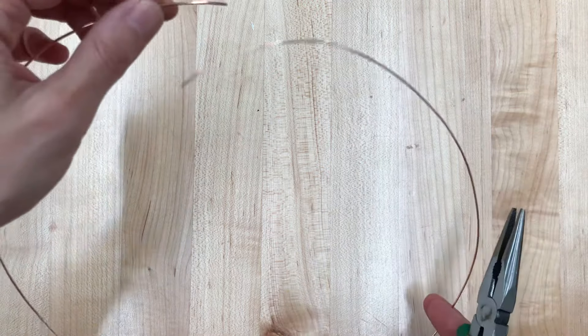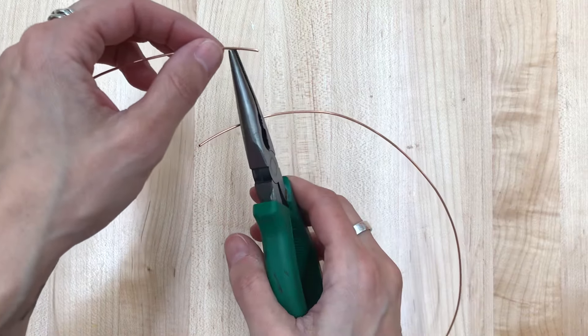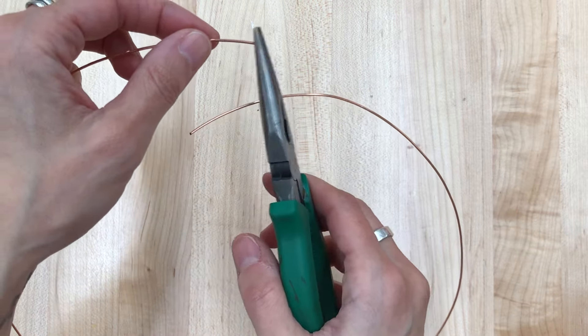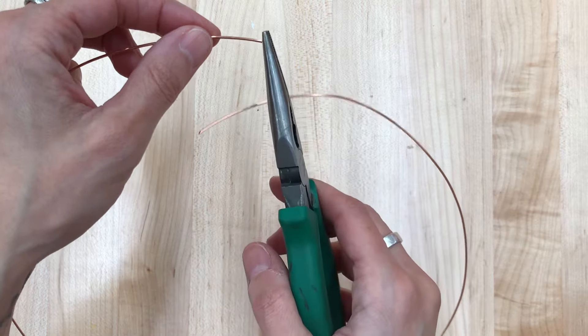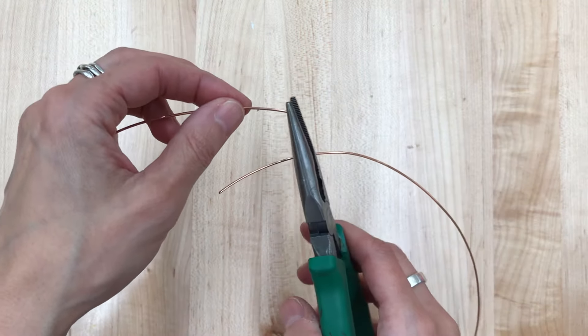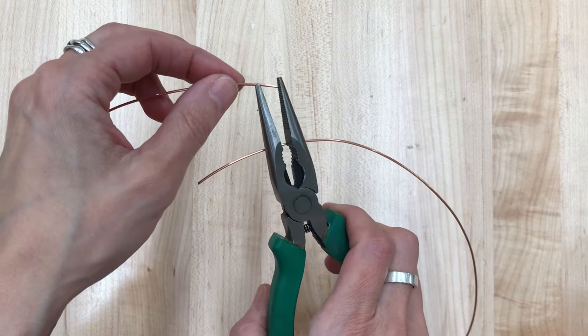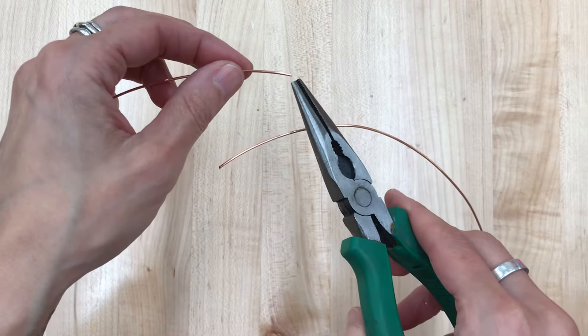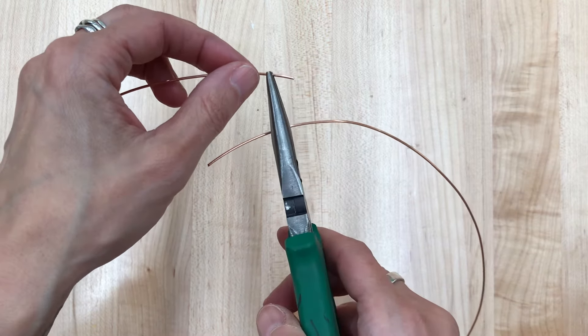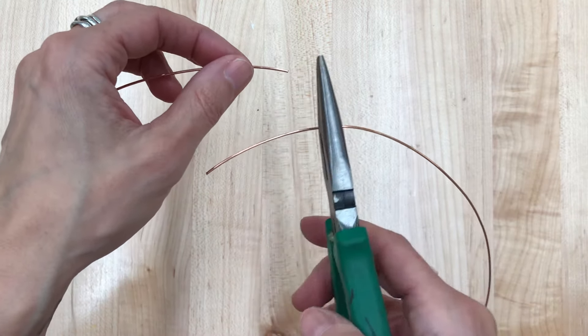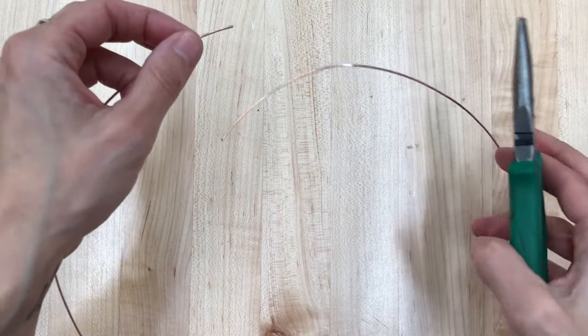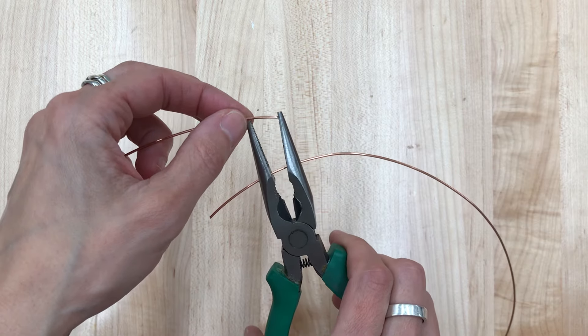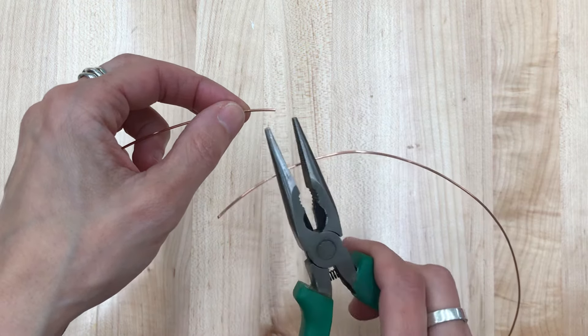And I always start this process by making what I call a fish hook. And what it does, whenever I begin, I make a fish hook so that I always have a little bit of slack so that when I bring the wire around to make the first circle of my sphere, I have a little bit of wire so that I can join things. If you don't make the fish hook, then sometimes it's easy to forget that you need a little bit extra in order to close the form.